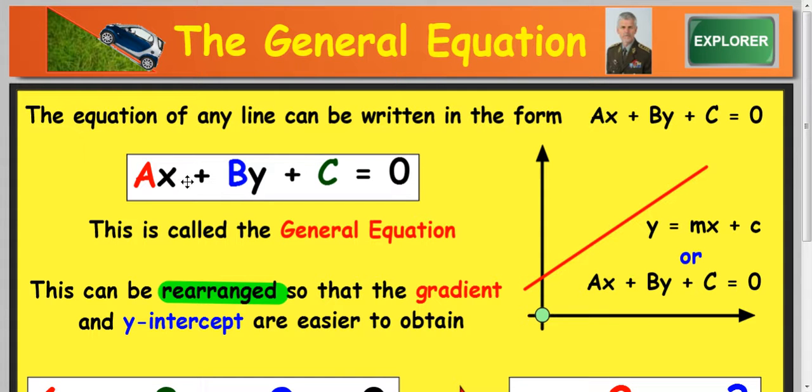Now the problem with this is that people try to take the gradient and the y-intercept the same way as they do with y equals mx plus c, picking the gradient off as the number in front of the x and the number value here as your intercept. That is not the case.